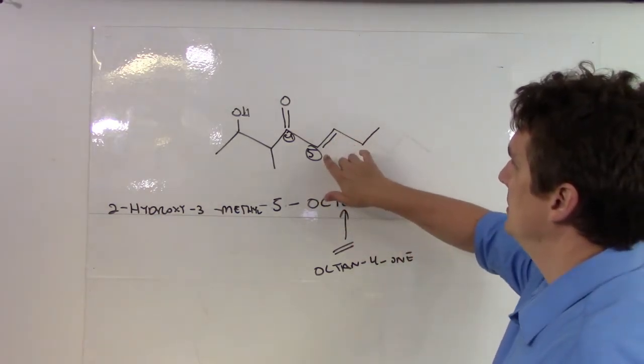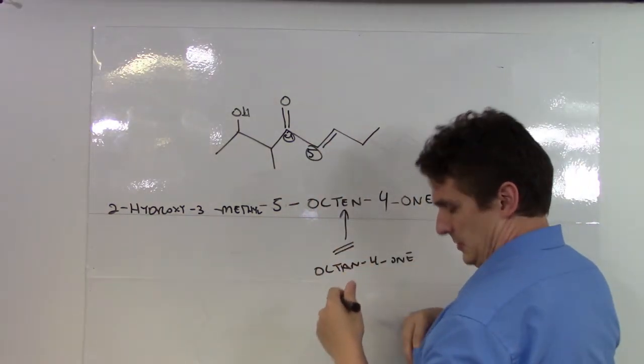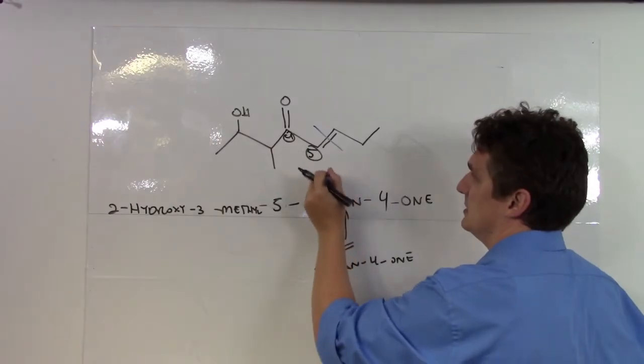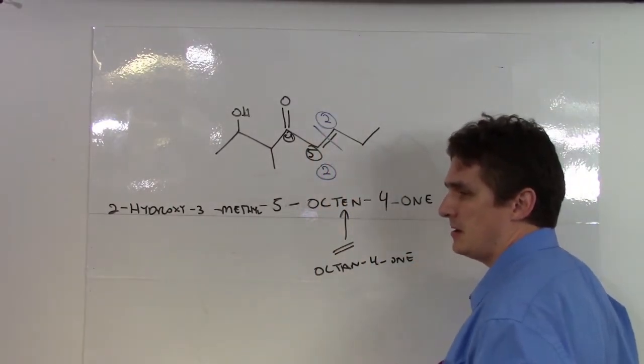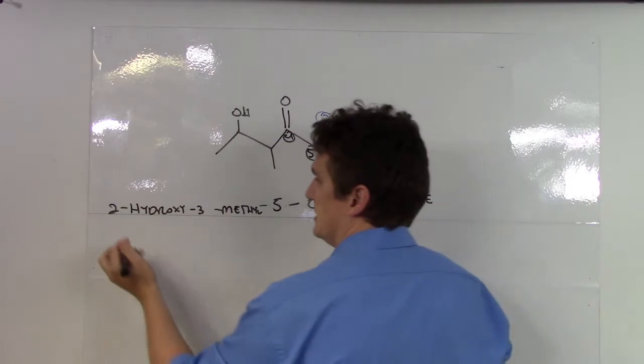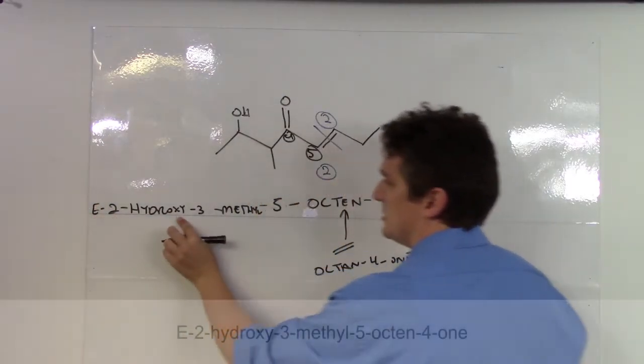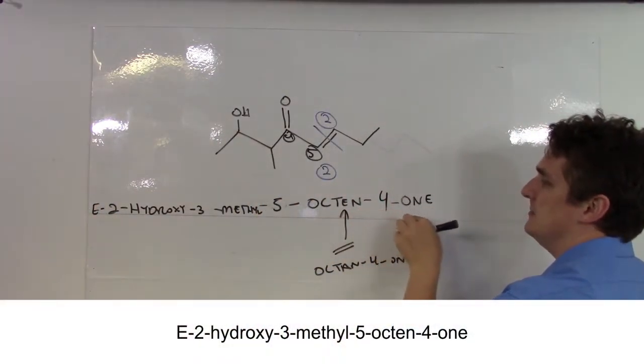And in terms of the E-Z, higher group is here. We look at this side of the bond, lower groups here, lower groups here. They are opposite. So this is E, 2-hydroxy, 3-methyl, 5-octene, 4-one.